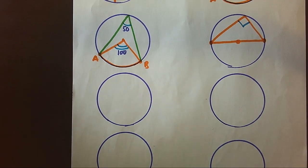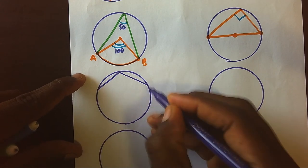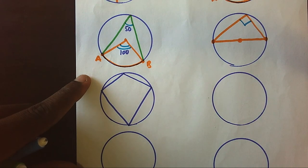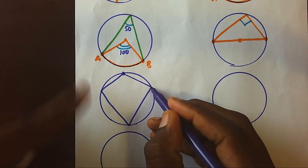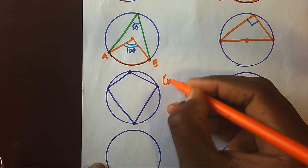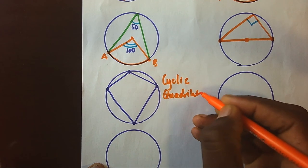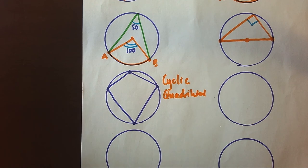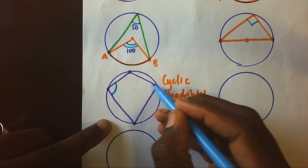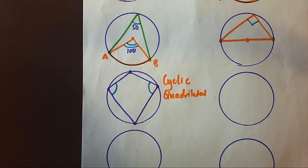The law tells us that we can have a four-sided shape inside a circle with all corners touching the circumference. This we shall always call a cyclic quadrilateral. The law says the two opposite angles of the cyclic quadrilateral will always add up to 180 degrees.